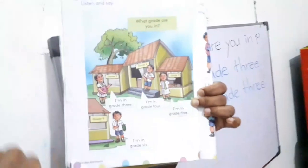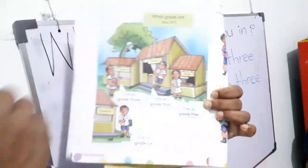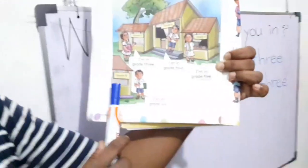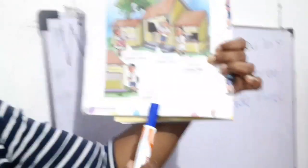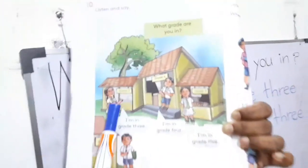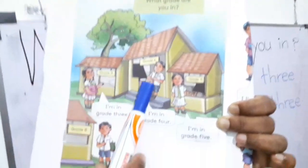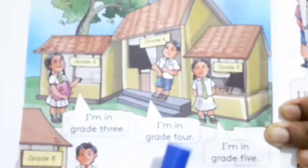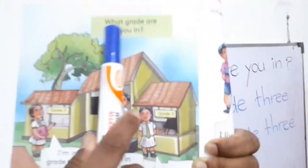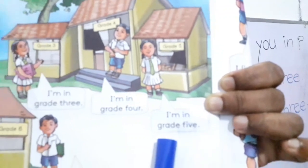Now this is the question: What grade are you in? The child in grade 6 says: I am in grade 6. What grade are you in? The girl in grade 3 says: I am in grade 3. What grade are you in? The boy says: I am in grade 4. What grade are you in? The girl says: I am in grade 5.